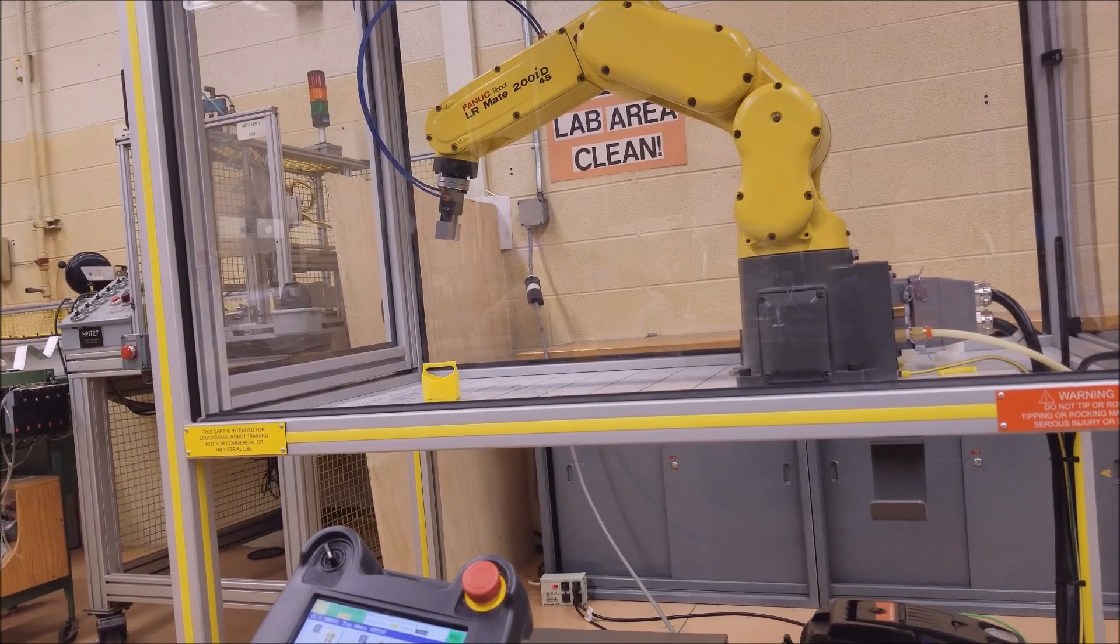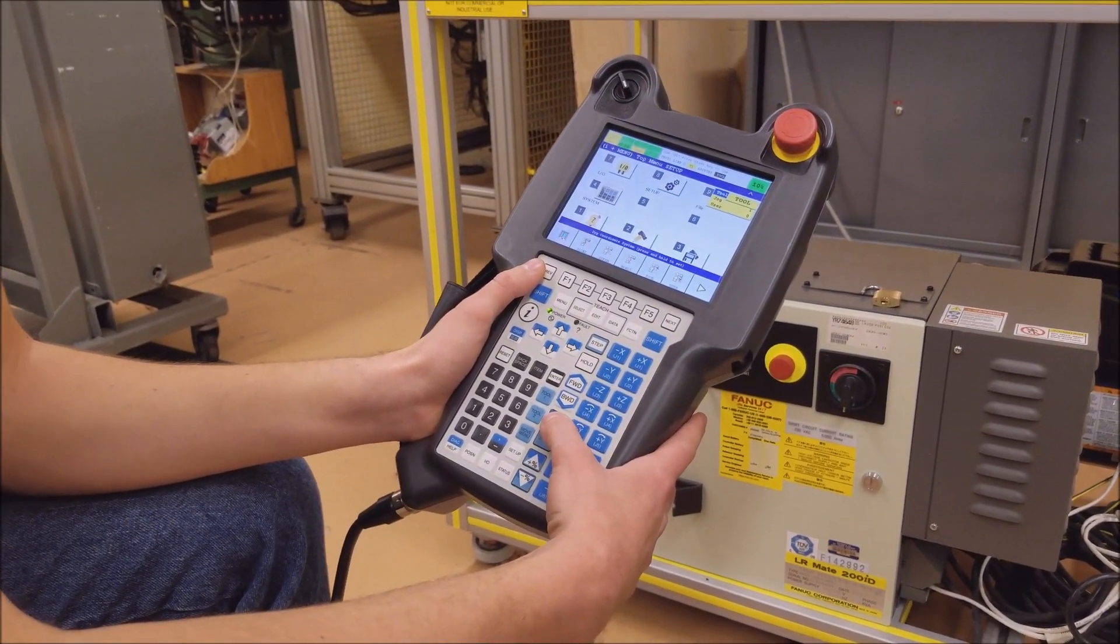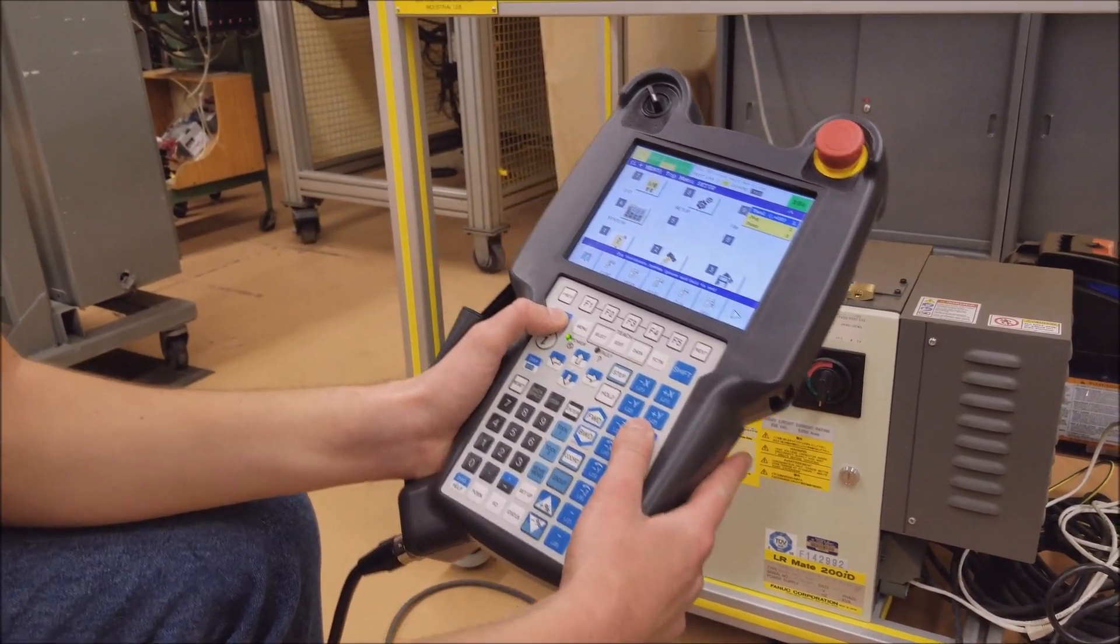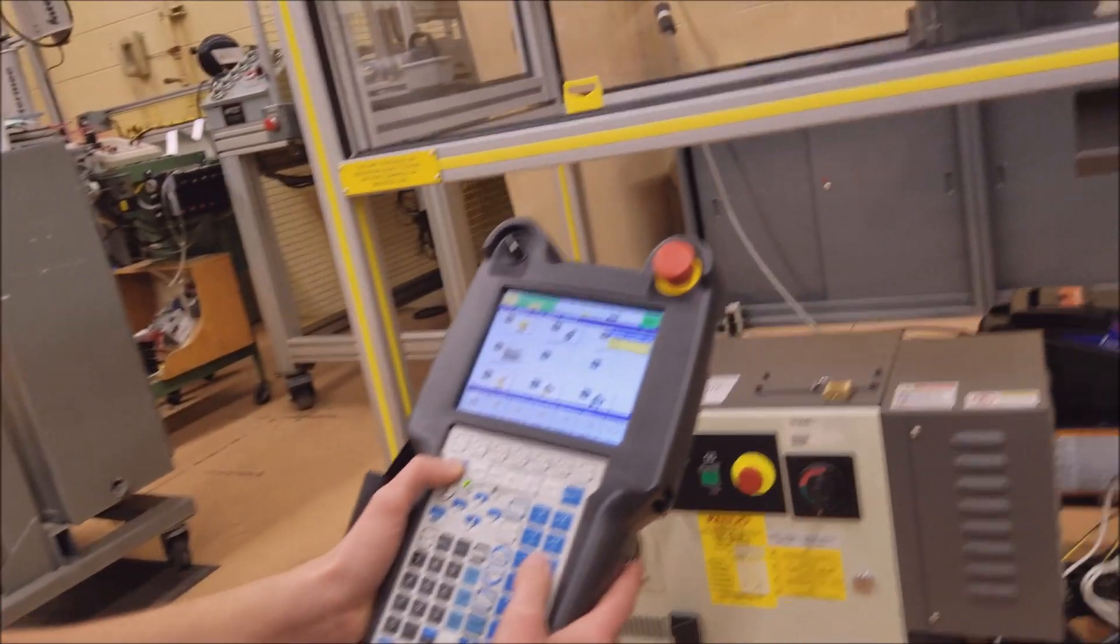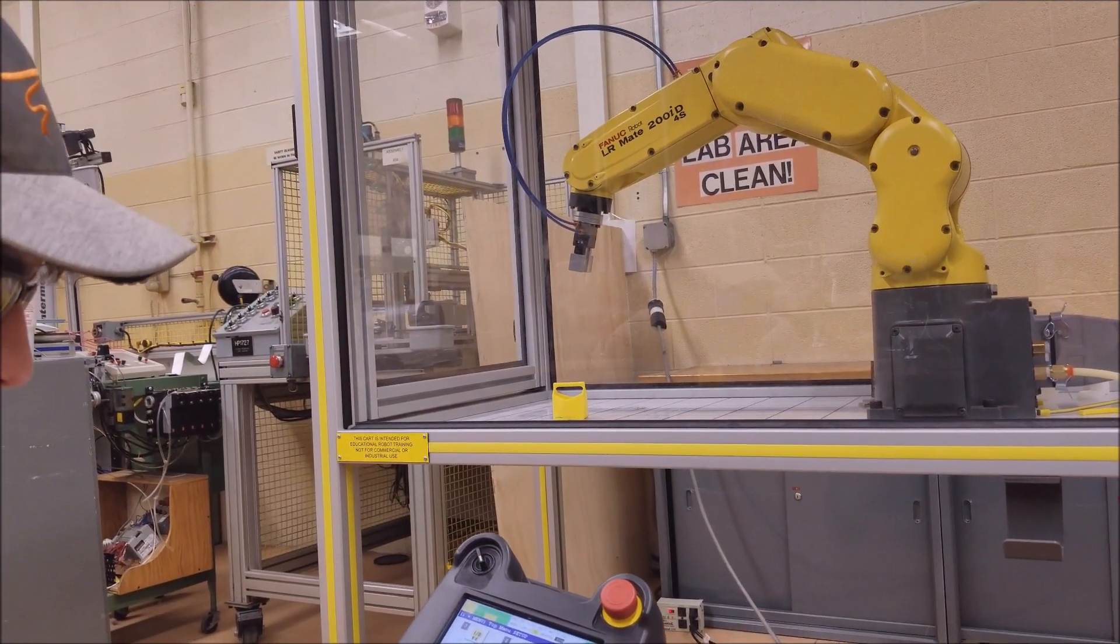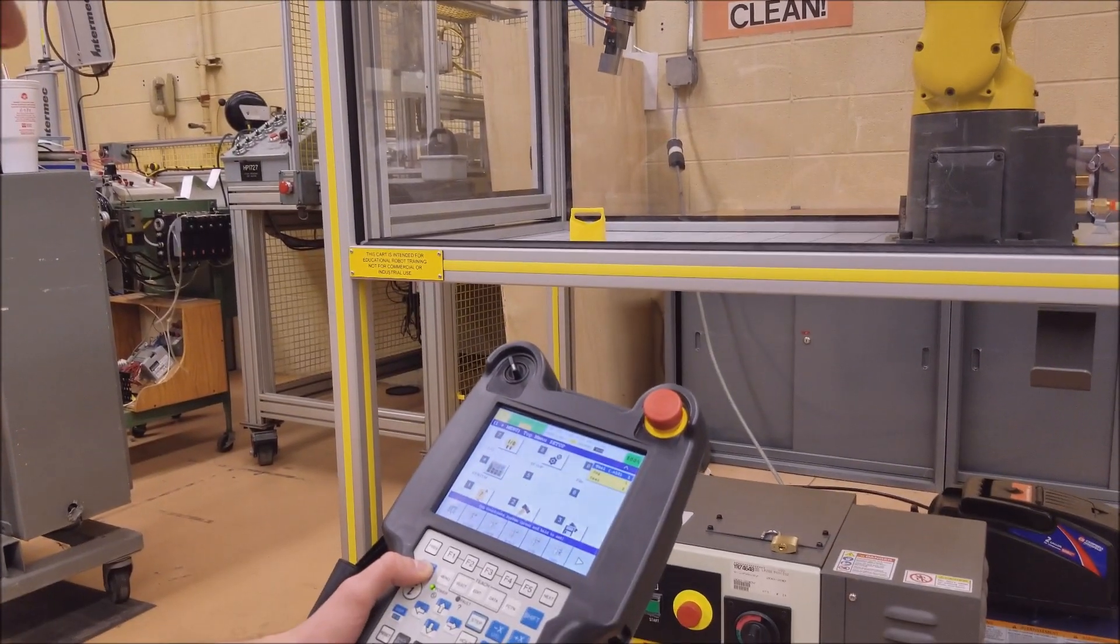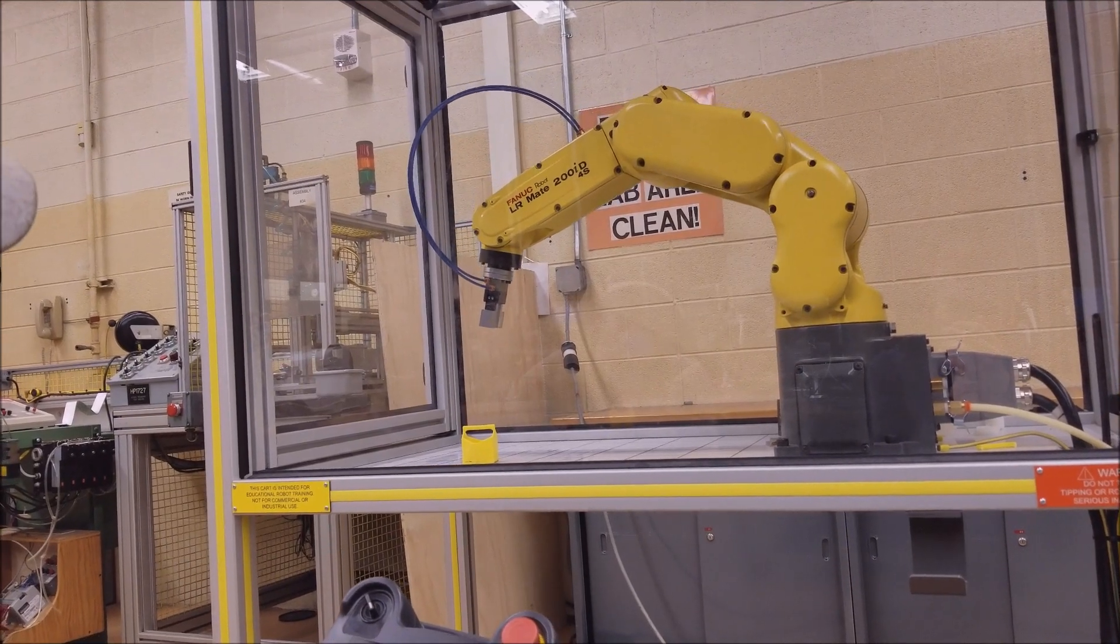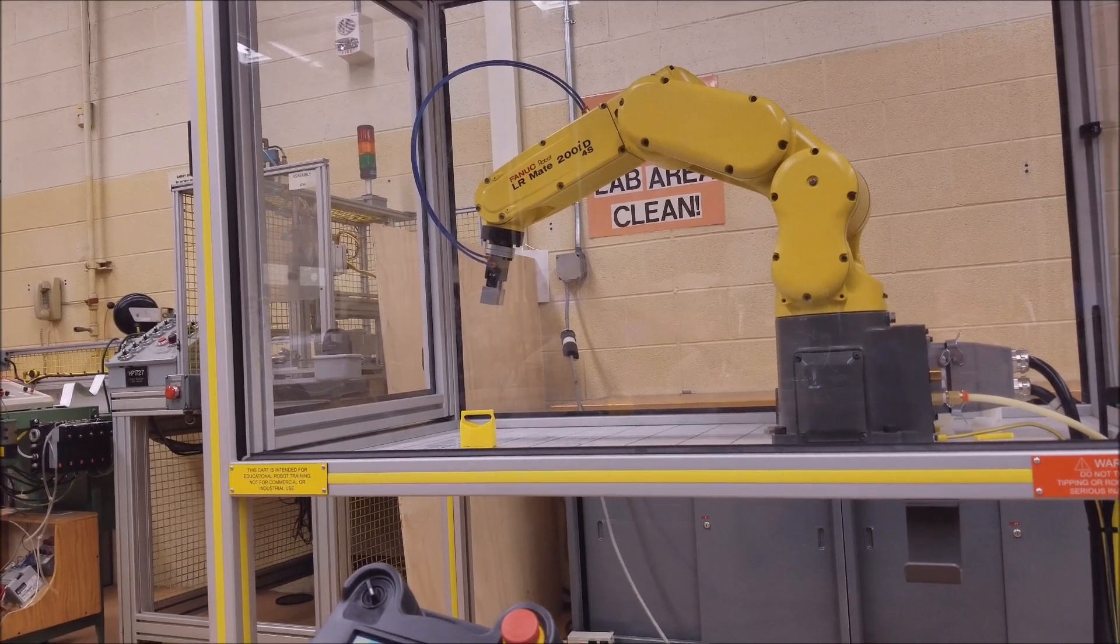And then I will switch to tool, which is the same as world except it will take the angle of the tool or the tooling into consideration. So if I do negative Z, positive Z, as you can see it's using the angle of the tool.